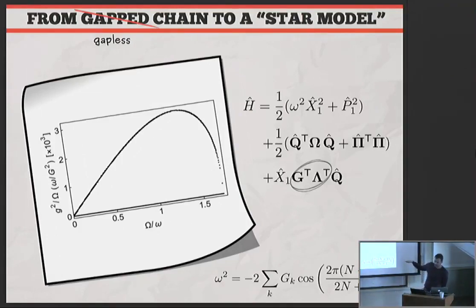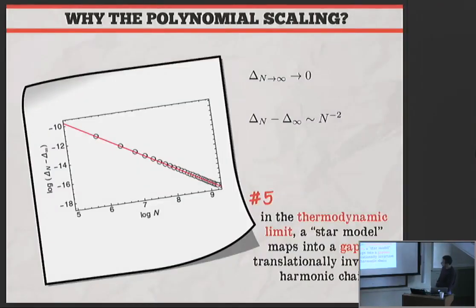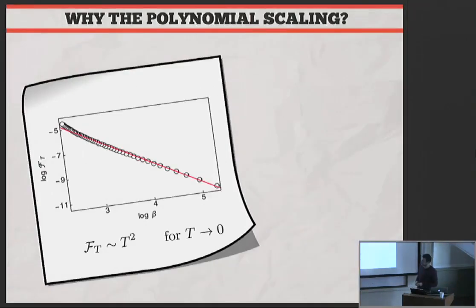What I'm trying to suggest is the Caldeira-Leggett model doesn't map into a gapped translational invariant harmonic chain. Therefore, the result of the exponential inefficiency of thermometers is not applicable. It indeed maps into a gapless translational invariant chain. I cannot use this exponential clustering of correlations. Therefore, I get a much better scaling of thermal sensitivity at low temperatures. This is indeed what happens. You can just go the other way. You start from the star model, discretize your frequencies and keep adding environmental oscillators such that the coupling strengths are tuned to this prescription. What you see is that the gap that appears in your system closes in the thermodynamic limit and closes like N to the minus 2. Therefore, the Caldeira-Leggett model really maps to a gapless translational invariant harmonic chain. Therefore, it's not strange to see that much better scaling of thermal sensitivity at low temperatures.